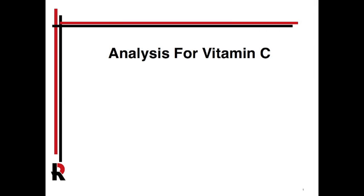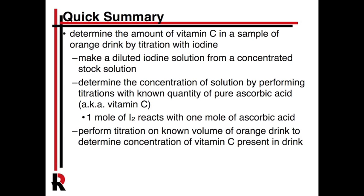This week's lab is entitled Analysis for Vitamin C out of the General Chemistry Lab Manual. It's a pretty cool lab where you're going to experimentally determine how much vitamin C is in a sample of Tang. You're going to use iodine and perform what we call a titration — a solution-based way of measuring how much material is in something. This is kind of your first titration of a couple if you continue in the chemistry curriculum.